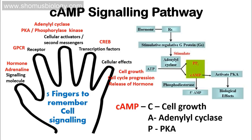One more important thing: the term C-A-M-P itself can help you recall the pathway. C stands for cell growth — immediately know the function. A stands for adenylyl cyclase — cyclic AMP is linked to adenylyl cyclase activation. M-P stands for PKA, Protein Kinase A. So whenever you hear 'cAMP,' you immediately know it's a cell growth pathway where a hormone activates adenylyl cyclase and Protein Kinase A.